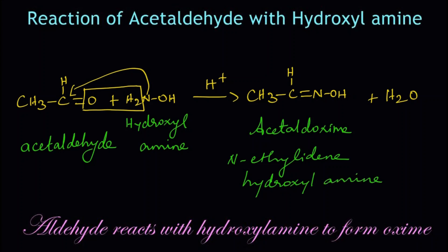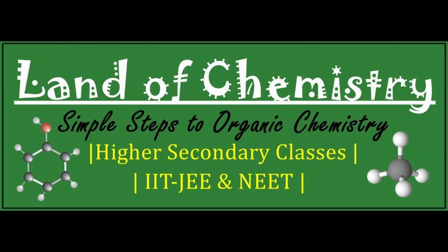Let's summarize the reaction: generally speaking, when an aldehyde reacts with hydroxylamine, it forms an oxime. In this reaction, we reacted acetaldehyde with hydroxylamine in the presence of an acid catalyst to get acetaldoxime, which is also called N-ethylidine hydroxylamine. Thank you.